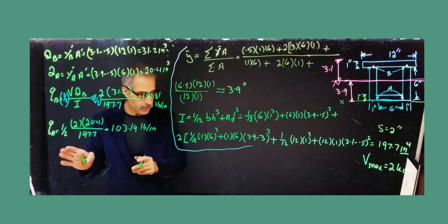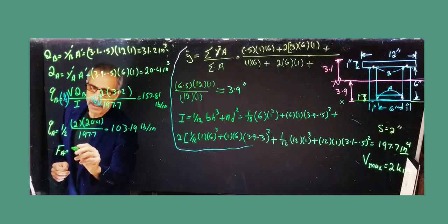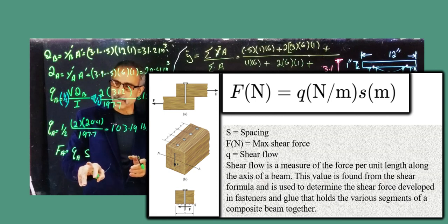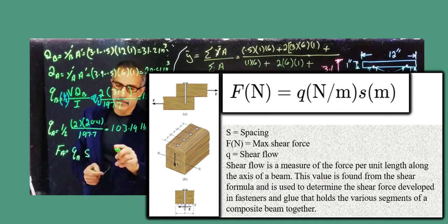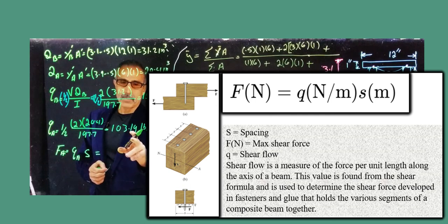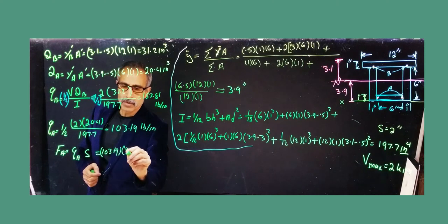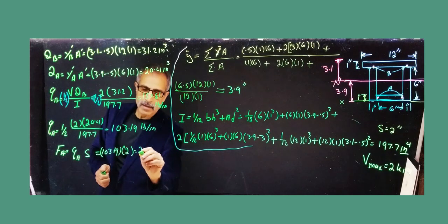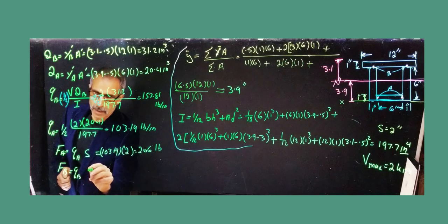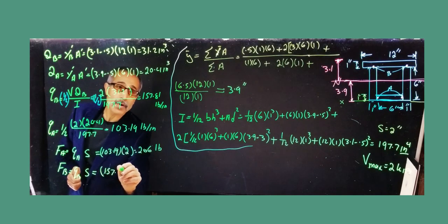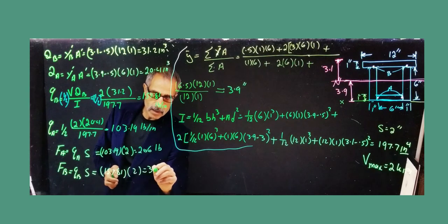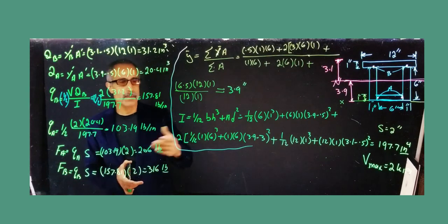Now using the equation F = q × s (force on nail equals shear flow times nail spacing): F_a = 103.19 × 2 inches = 206 pounds. F_b = 157.81 × 2 inches = 316 pounds. If the nail is rated for, say, 400 pounds, it will hold. If not strong enough, reduce the nail spacing.